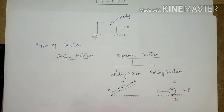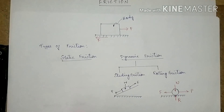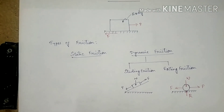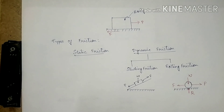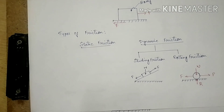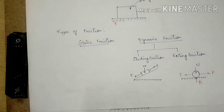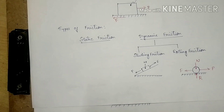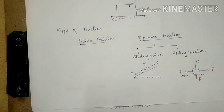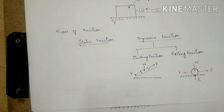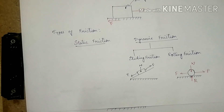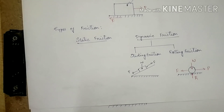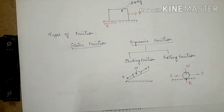Depending on the nature of the contact surface, friction can also be classified into dry friction and fluid friction. Dry friction occurs when the surfaces between two bodies are dry. Fluid friction refers to the contact force between fluid layers or between a solid and a fluid.